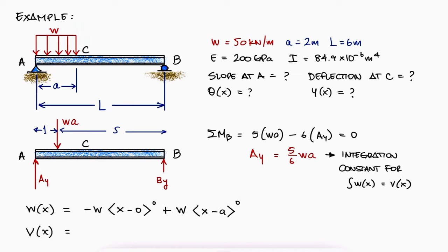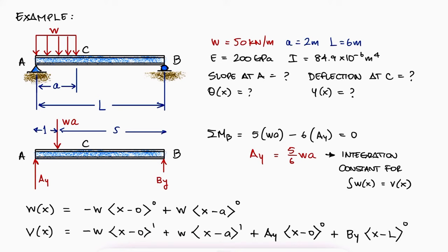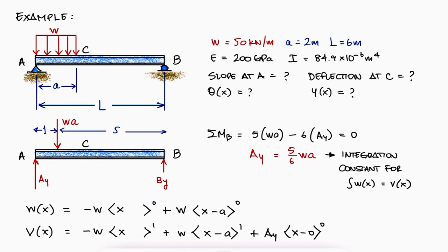For the distributed load equation w(x), there is a negative W beginning at 0 and ending at A, meaning a second step function with positive W counteracts it to cancel out the load. The shear function v(x) is the integral of these terms plus external point loads including reaction forces as integration constants. There is a positive AY at x equal to 0. Since x minus L will always be zero within the domain 0 to L, that last term doesn't need to be written — that's why we didn't need the reaction at B. An x minus 0 within brackets is just x, and since x cannot be negative within the beam, the first term simplifies to just minus W.